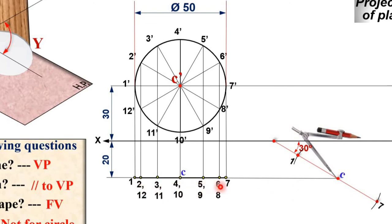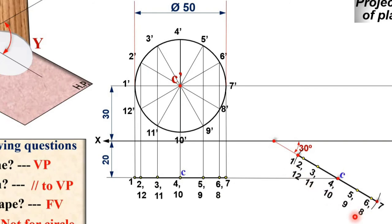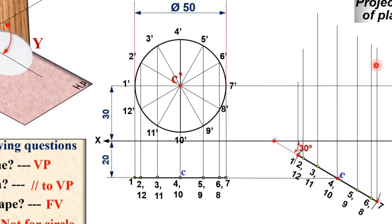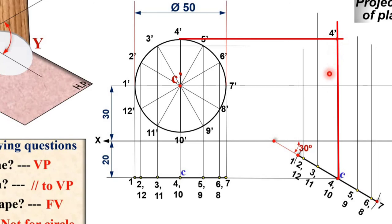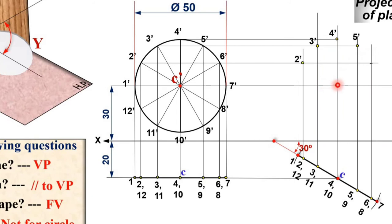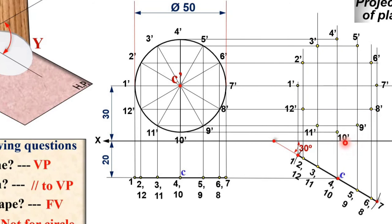Similarly, transfer the remaining distances with the compass. Then draw vertical projections from each point, and horizontal projections from each corresponding front view point. The intersection of the horizontal projection from a point like 4-dash and the vertical projection from that point gives the final position, for example 4-dash. Find all remaining points similarly and join them with a smooth curve using a French curve or freehand, since it is a circular plate. This completes the second stage.